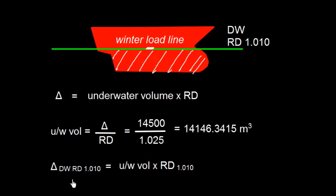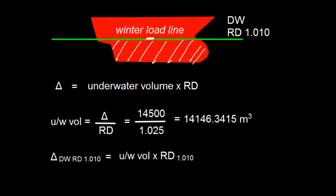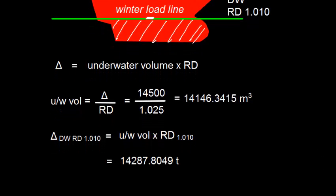So let us find the dock displacement in dock water of RD 1.010 is going to be underwater volume into relative density. Well this will be 14287.8049. It is simply we multiply this with 1.010 and we get this product.